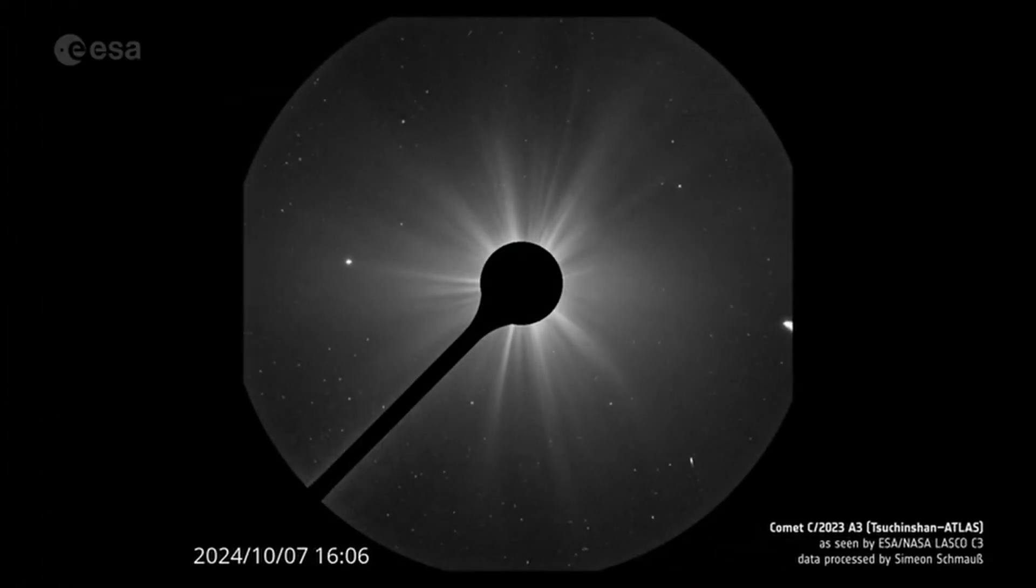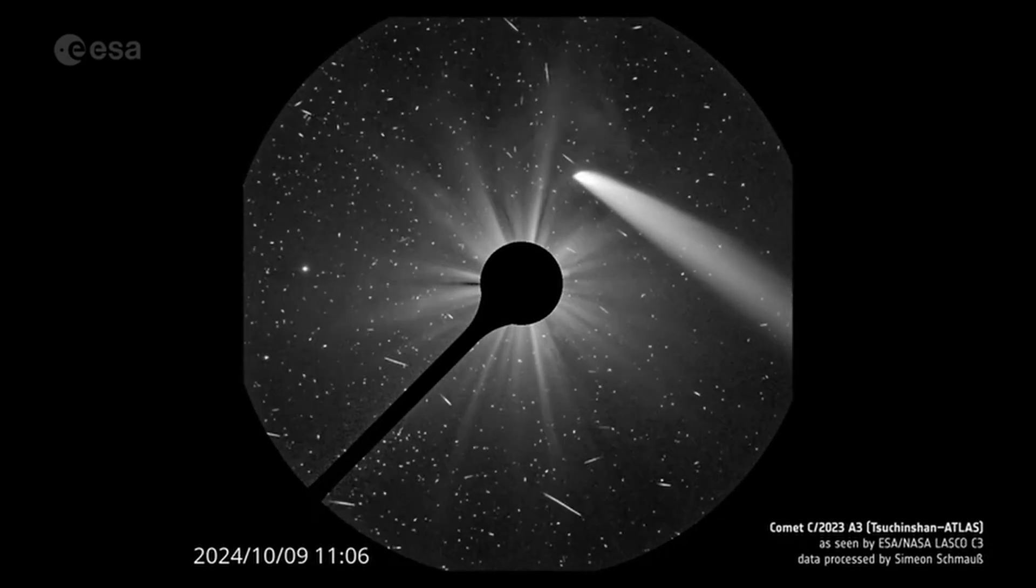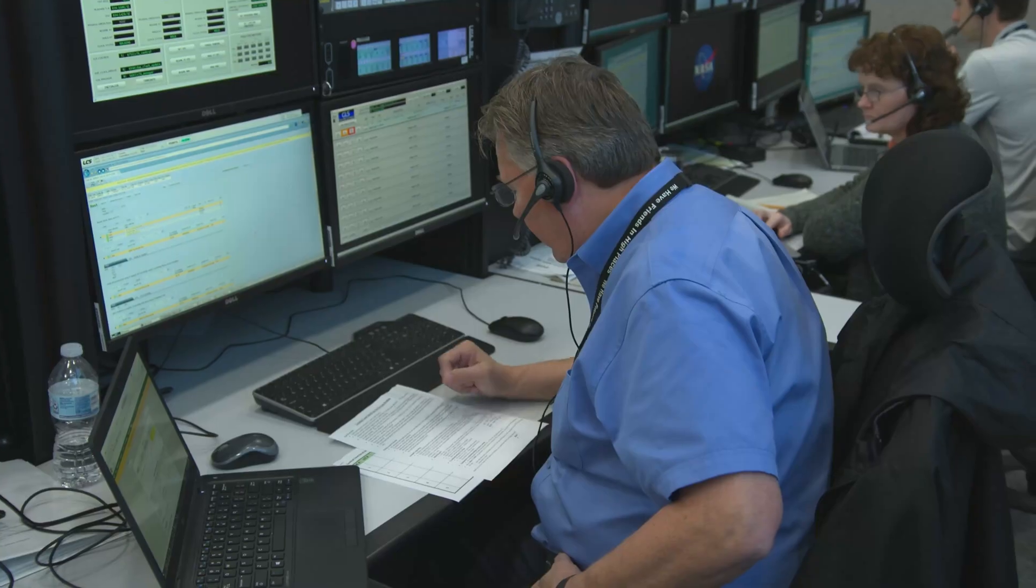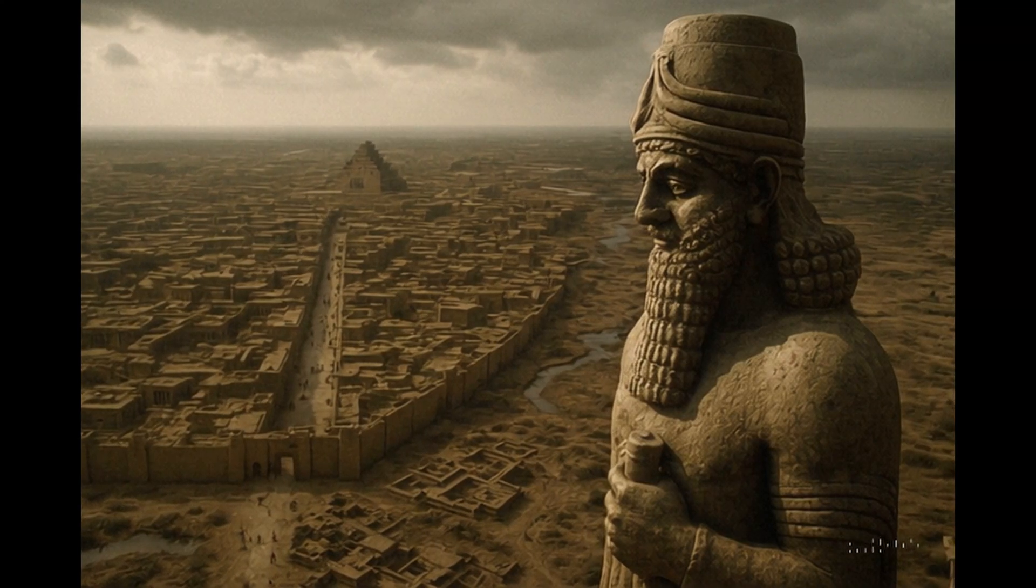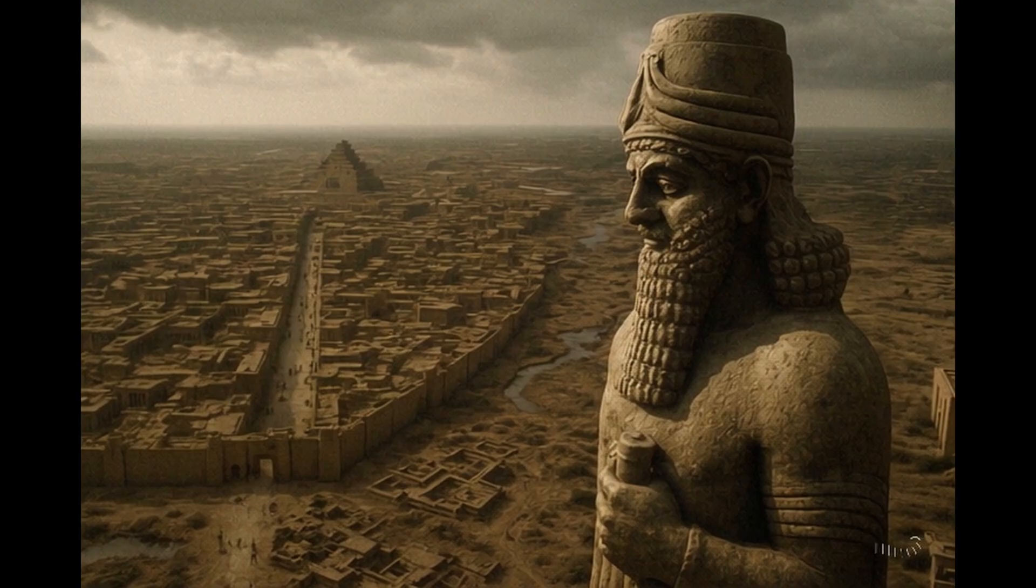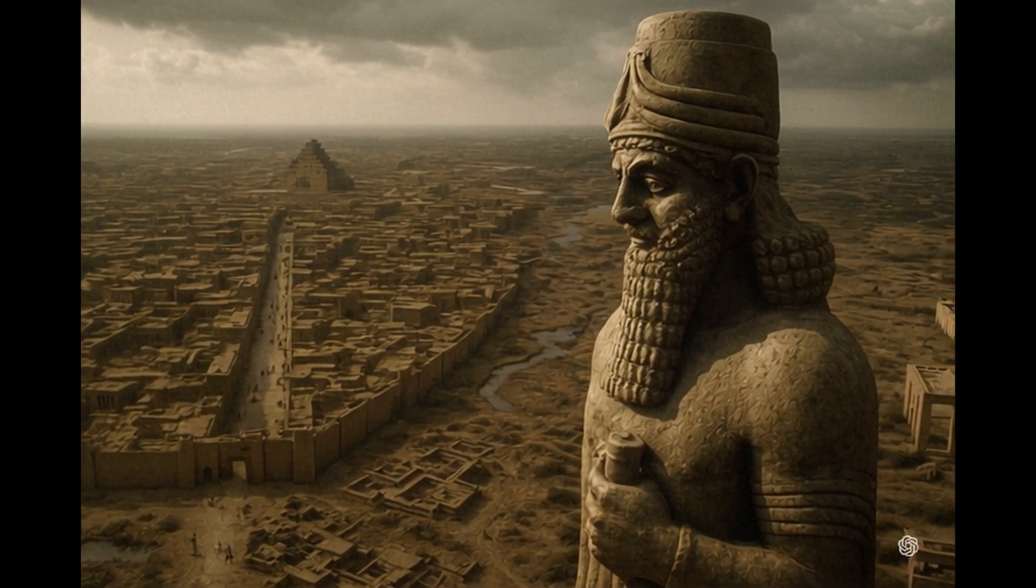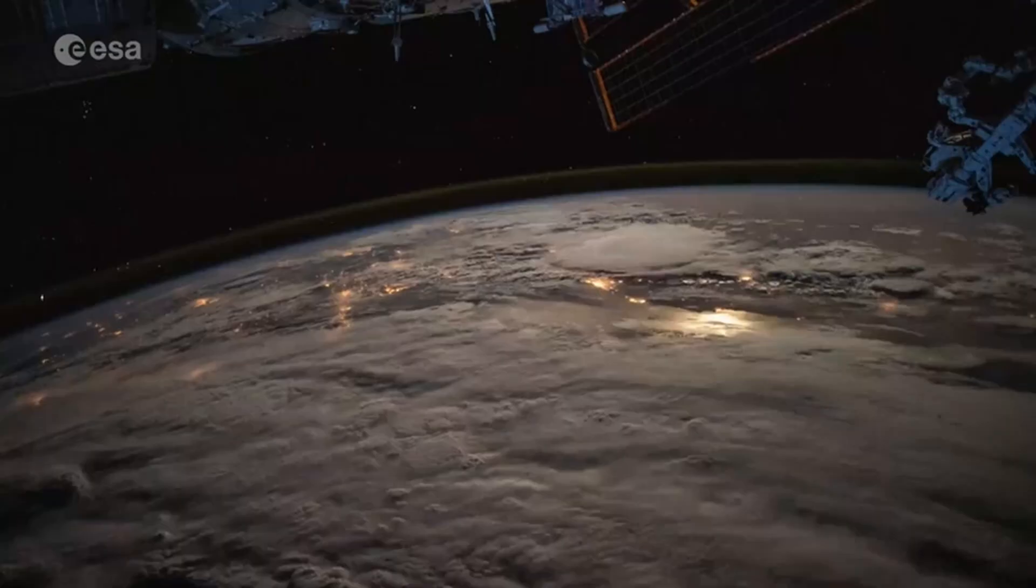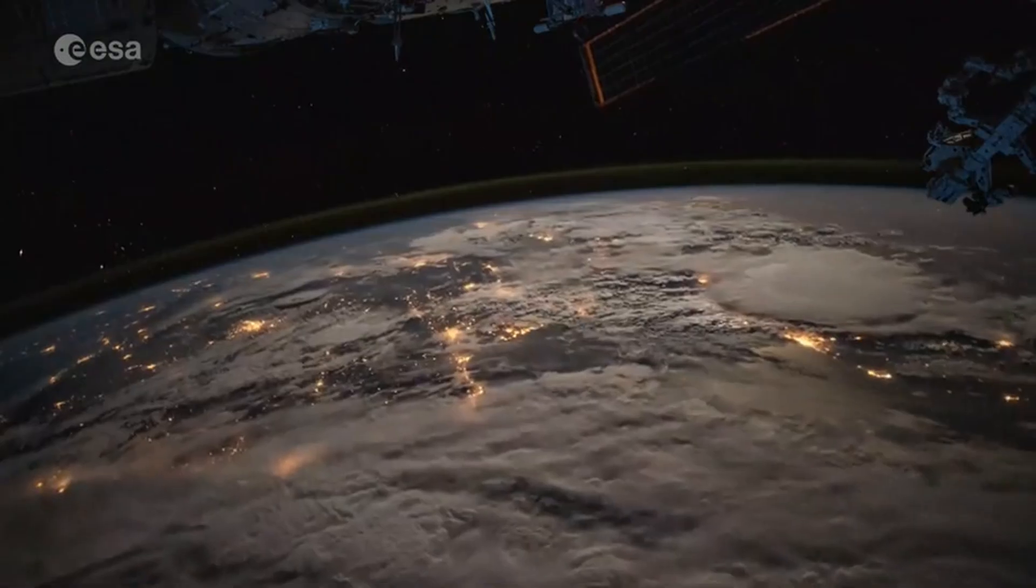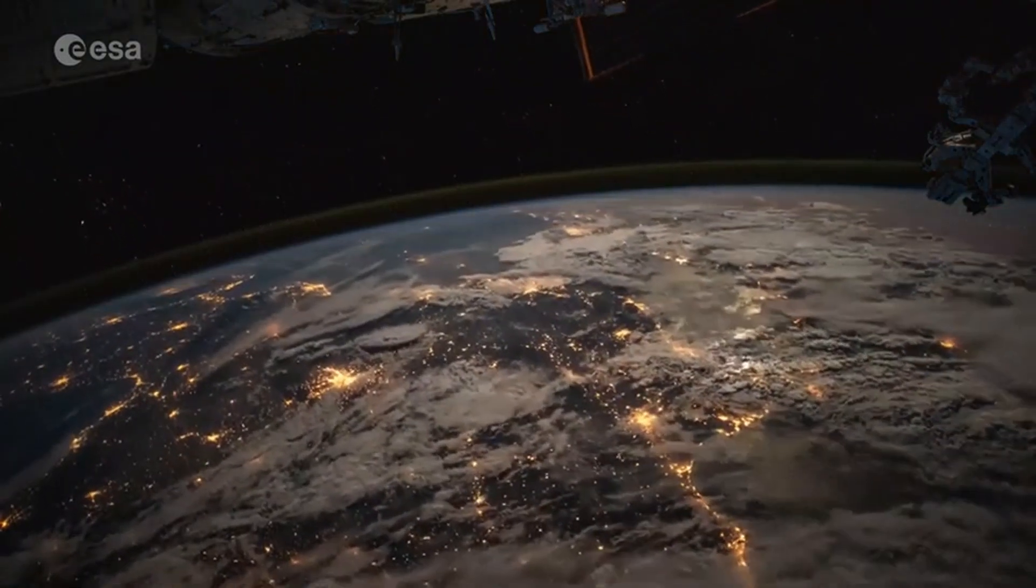Our rational minds tell us it's all a coincidence, that events on Earth are separate from the dance of comets in the heavens. But what if we've forgotten an ancient wisdom? The Babylonians believed that the sky and the Earth were one, that the celestial and the terrestrial were inseparable.